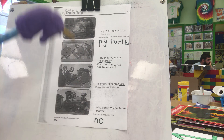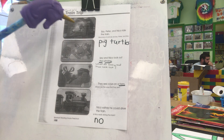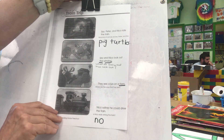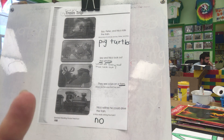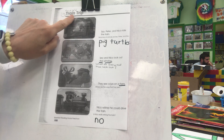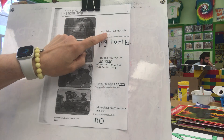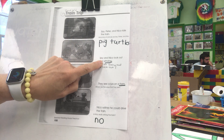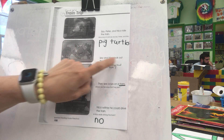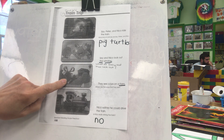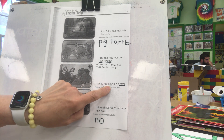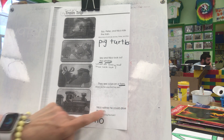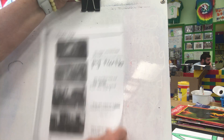Answers for our questions come from the text, from the picture, or it's an opinion where you can't get it right or wrong. Take your magic pointer finger, let's slide, glide, and read. The Train Trip: Izzy, Peter, and Nico ride the train. Izzy and Nico look out the window. They see cows on a farm. Nico wishes he could drive the train. Me too.